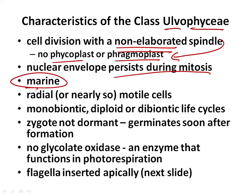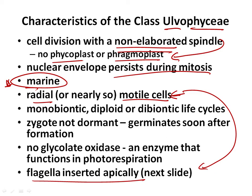Unlike the Chlorophyceae, these organisms are marine. There are always exceptions, but more than 90% — probably more than 95% — are marine. So it is a marine group. Just like in the Chlorophyceae, the mobile cells are radial, and we'll see in more detail what that means, especially for the insertion of the flagella. Radial cells with apically inserted flagella is a characteristic shared with the Chlorophyceae.